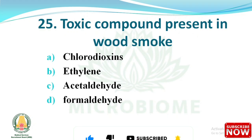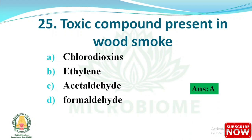Next question: the toxic compound present in wood smoke is — options: (A) chlorodioxin, (B) ethylene, (C) acetaldehyde, (D) formaldehyde. The right answer is option A, chlorodioxin.